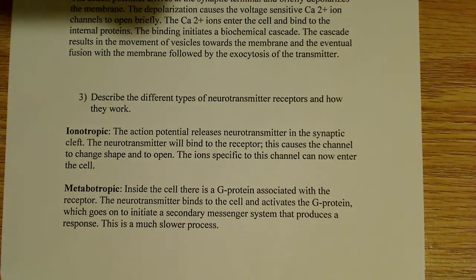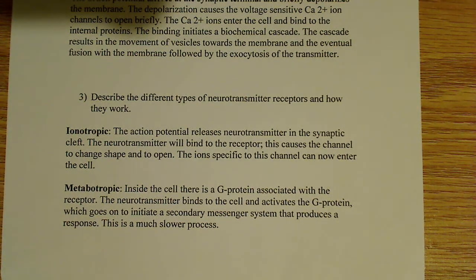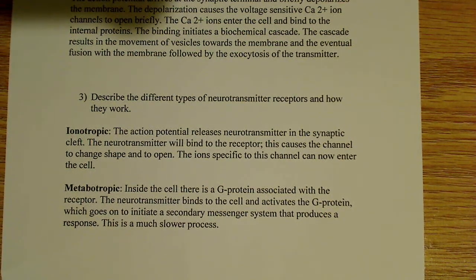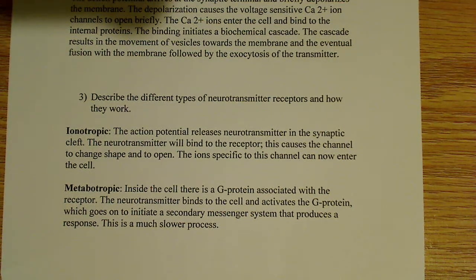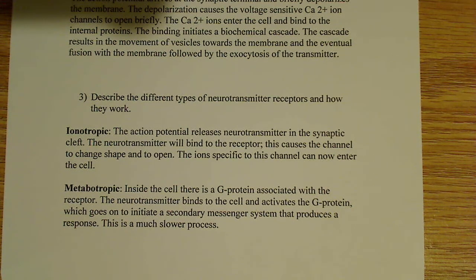This secondary messenger system produces a response, but that whole process — the secondary messenger system and G protein — is much slower. That's important because everything we do, whether you think, walk, work out, or run, all of those things require quite rapid action of the nervous system. Things have to be moving very, very fast, so speed is an issue. In that case, ionotropic receptors are much more efficient.